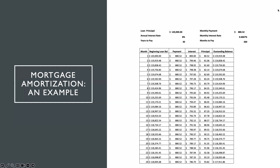We undertake the same process for month two: we multiply $119,919.48 by 0.6667% and get an interest payment allocation of $799.46. We subtract that from the monthly payment of $880.52 and get a principal payment allocation of $81.06. Thus, we get an outstanding balance at the end of month two of $119,838.42.